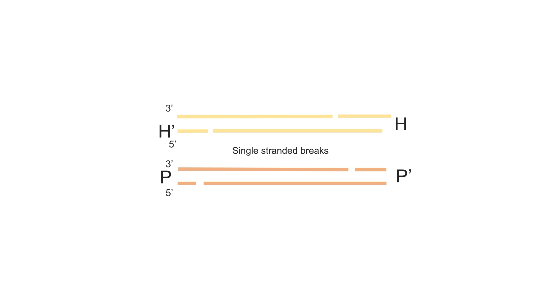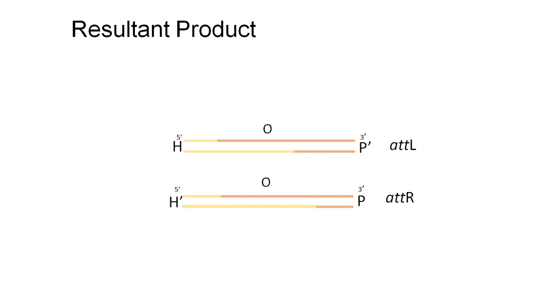This recombination involves first round of single-strand cleavage and exchange, resulting in Holliday junction intermediate, which is resolved by second-strand cleavage and exchange. If partner sequences attH and attPH are compatible, this results in recombinant products attL and attR. We have found that resulting product attL can also recombine with attH.